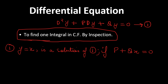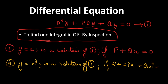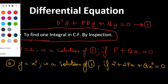Point two: if y = x² is a solution of equation one, that will happen if 2 + 2Px + Qx² = 0. Since we have an x² term, we need that condition to hold.